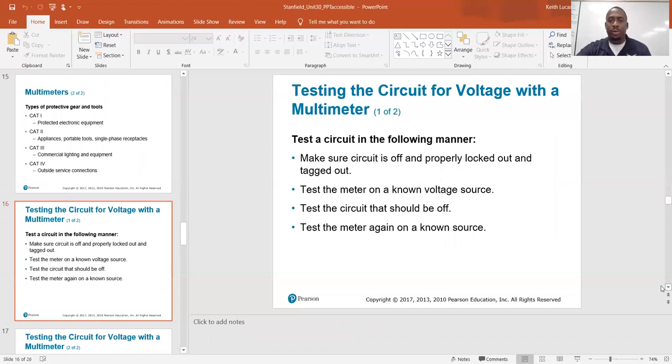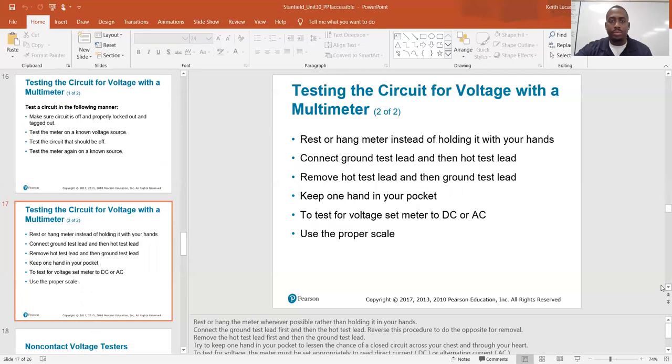Testing the circuit for voltage with a multimeter. Test the circuit in the following manner. Make sure the circuit is off and properly locked out and tagged out. Test the meter on a known voltage source. Test the circuit that should be off. Test the meter again on a known source. Rest or hang meter instead of holding it with your hands. Connect ground test lead, and then hot test lead. Remove hot test lead, and then ground test lead. Keep one hand in your pocket to test for voltage. Set meter to DC or AC, depending on what you're working on. Use the proper scale.